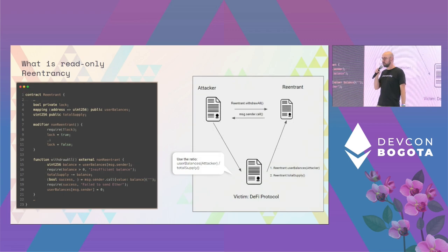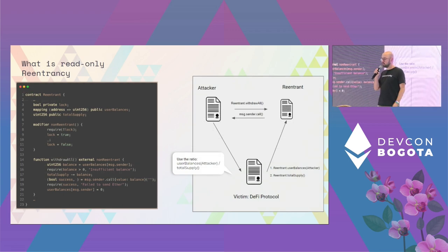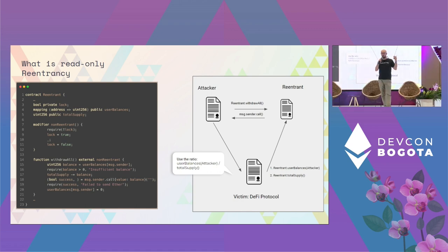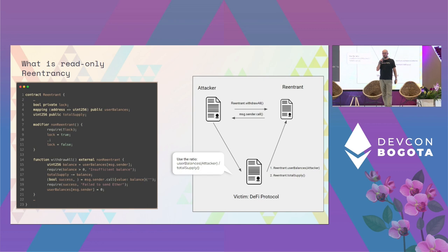This can be easily fixed. People deal with this problem by introducing a non-reentrant modifier. If we revisit the same function, we cannot call withdraw-all again when we receive the Ether, because the lock is true and the whole transaction will fail.